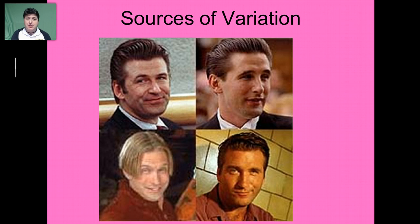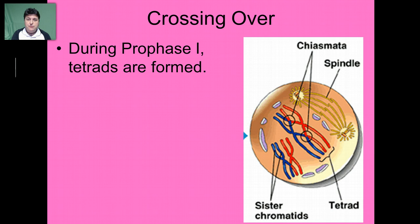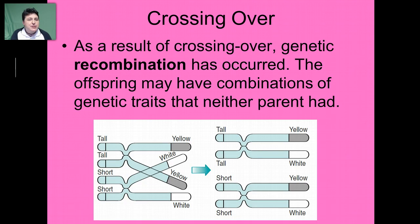Meiosis is a major source of variation for sexually reproducing organisms. With the exception of identical twins, children of the same family are never exactly alike, and the explanation lies in the details of meiosis I. One of the first sources of variation is crossing over, which occurs during prophase I. The tetrads form, and the chromatids of homologous chromosomes are very close to each other, such that they sometimes overlap at a point called the chiasma. It is during this overlap that homologous segments can exchange places. As a result, genetic recombination occurs, so offspring may receive chromosome combinations that the parents never had.